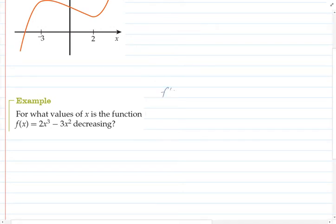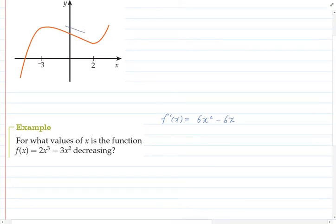So I'm going to start by differentiating this function. So the derivative of that function is going to be 6x² - 6x. And if I am going to think about where it is decreasing, well it's going to be decreasing when its gradient is negative. So in other words, when the gradient of the function is going down, it's going to be negative.